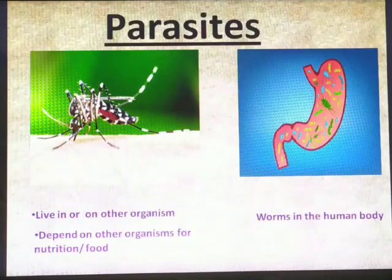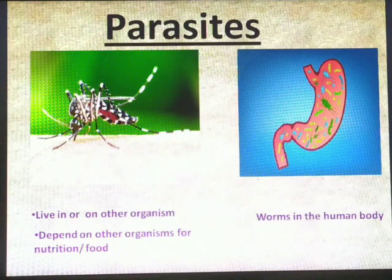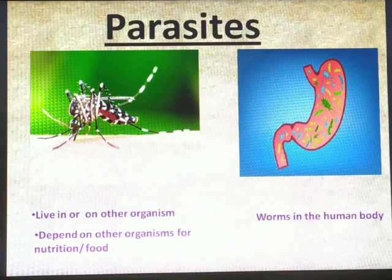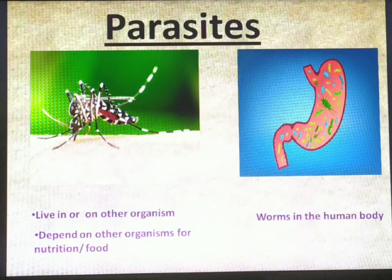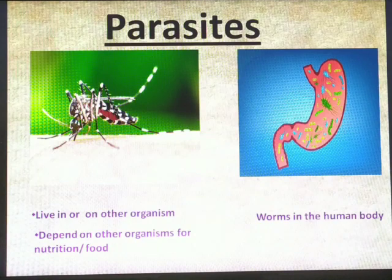Scavengers feed upon dead animals. The last category is parasites. Parasites are quite dangerous — they mostly feed on or in living organisms, meaning they get their food from living organisms. For example, the mosquito bites and sucks blood to get its nutrition. For this biting purpose, it has a long needle-like structure that helps in sucking blood from humans and animals.